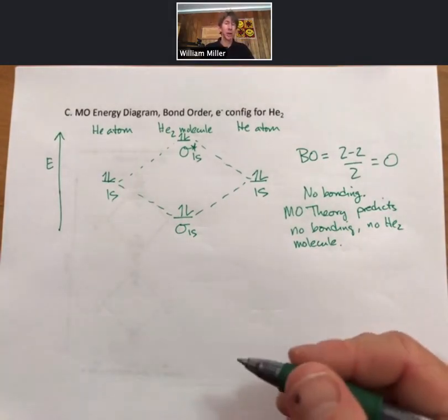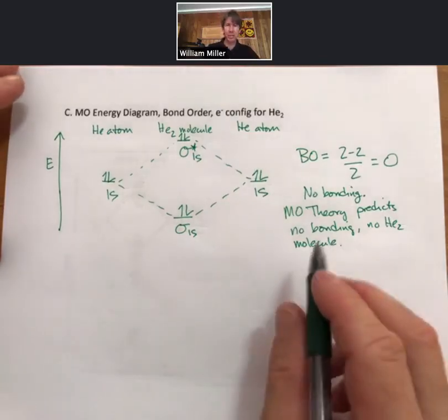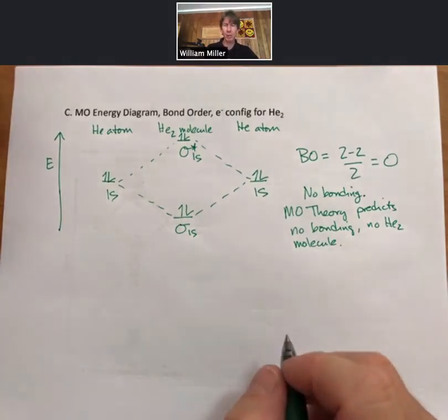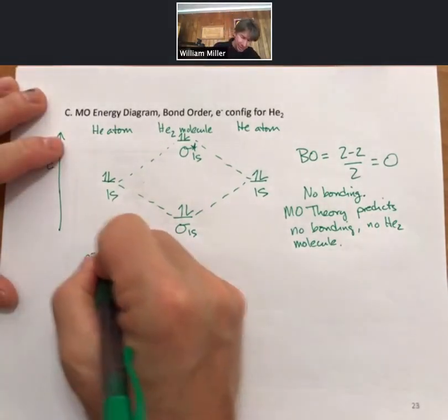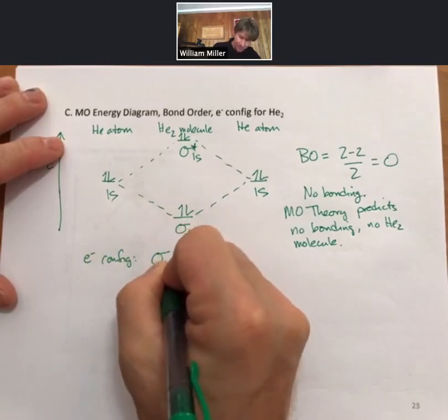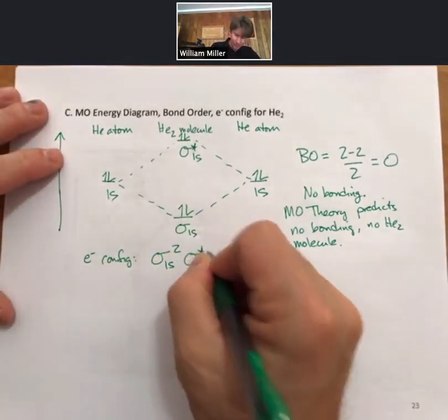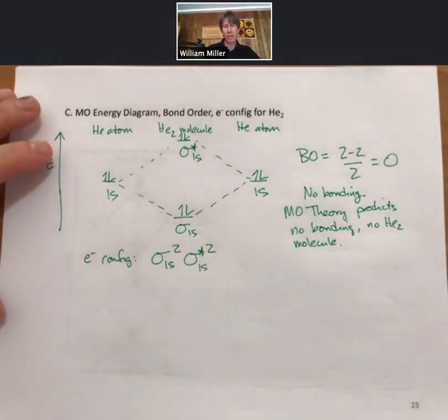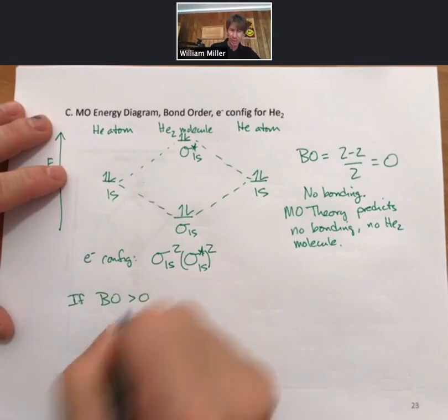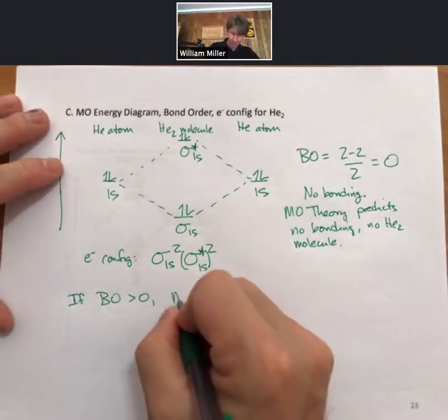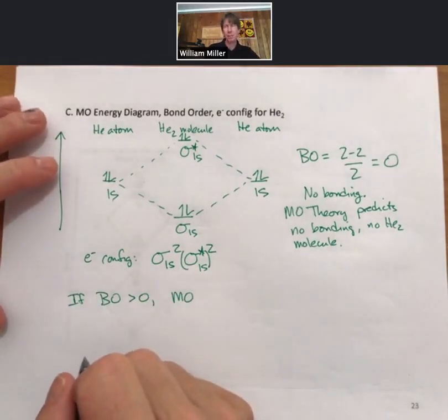That's nice because now we can start to make predictions, not just starting with a formula and drawing the Lewis structure. MO theory is much more powerful. The electron configuration for helium-2 would be sigma 1s squared, sigma star 1s squared. You can put things in parentheses to separate the star from the 2.